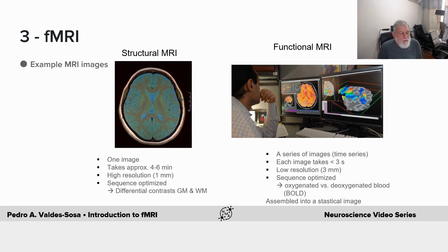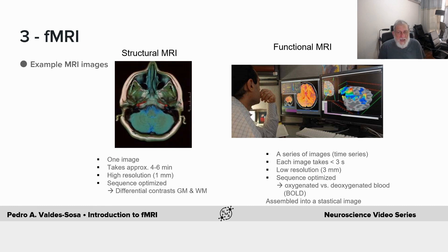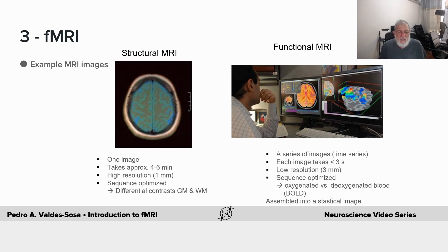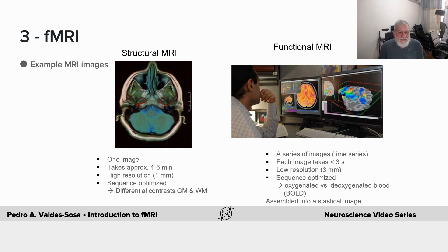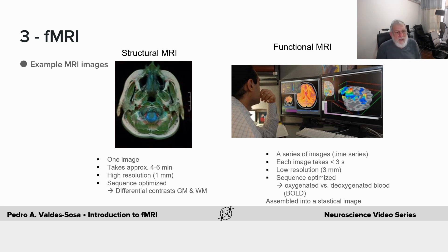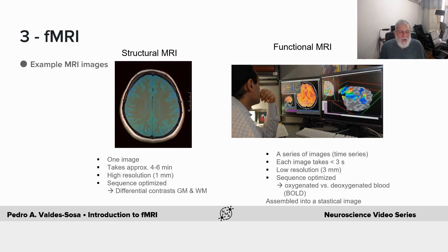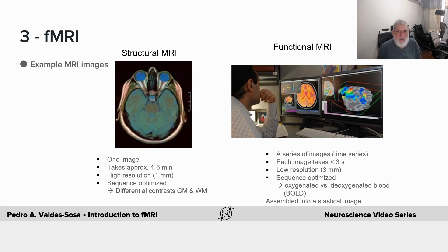We have here one millimeter resolution; with higher magnetic fields, even higher resolution is possible. The sequences have been optimized to produce differential contrasts between tissues, like white matter, gray matter, and so forth.